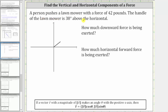A person pushes a lawnmower with a force of 42 pounds. The handle of the lawnmower is 38 degrees above the horizontal. So if this is the lawnmower handle, we know this angle here is 38 degrees. We're asked to determine how much downward force and horizontal force is being exerted.